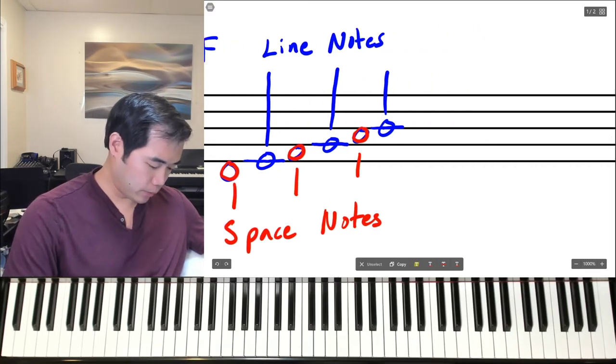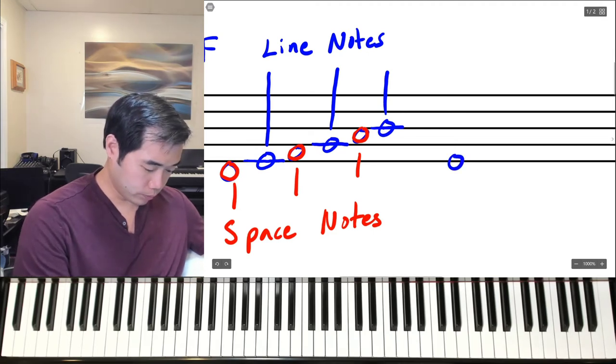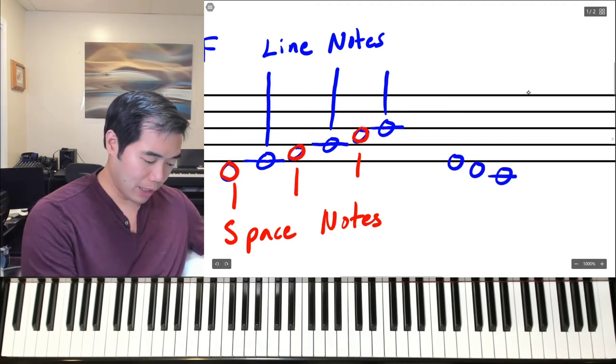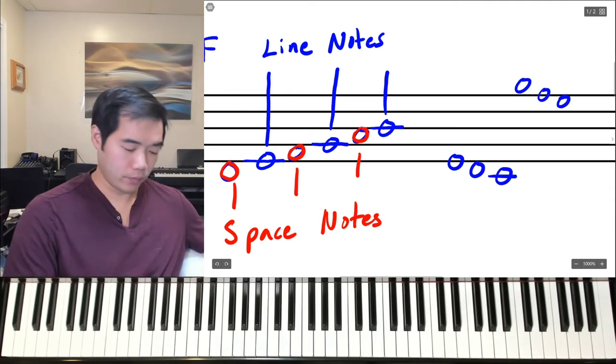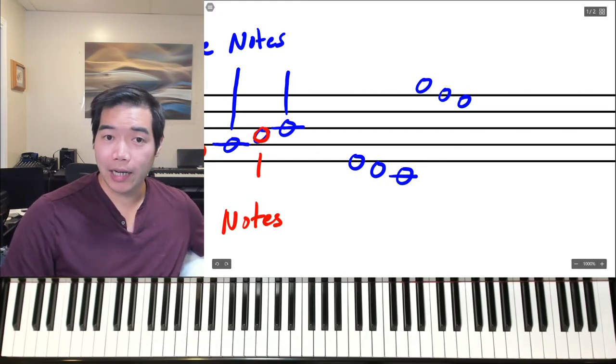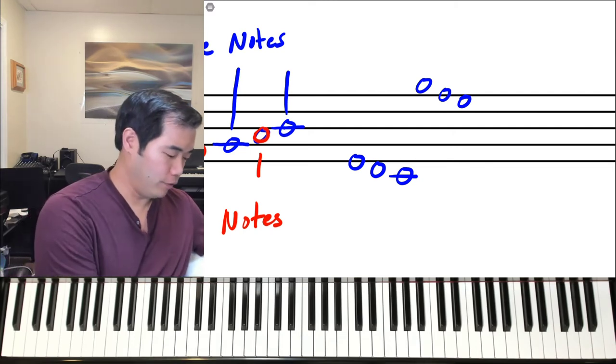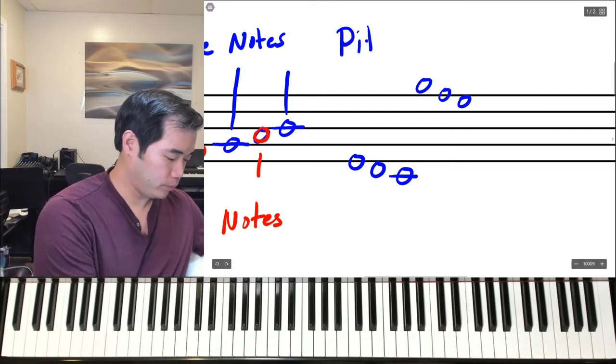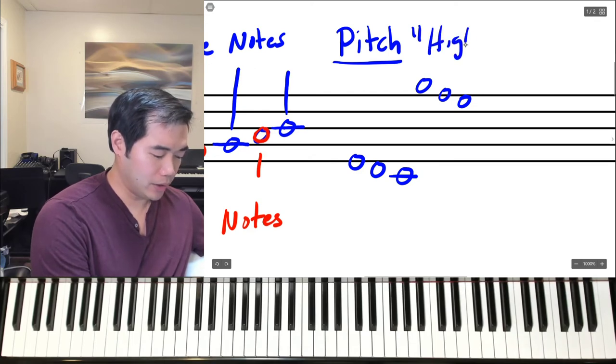Now, the notes can be written either lower or they might be higher on the staff. The lower the notes are on the staff, the lower they will sound in pitch. Pitch is the highness and lowness of sound. So pitch tells us if a note sounds higher or lower.